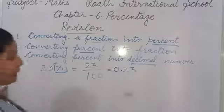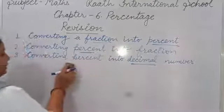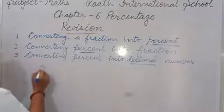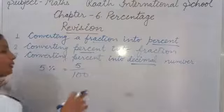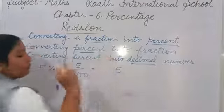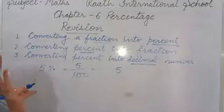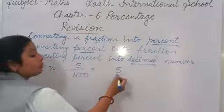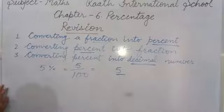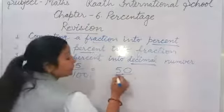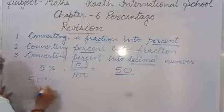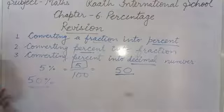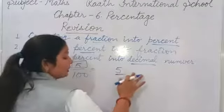Like this we can convert percent into decimal. One more example: suppose we have 5 percent. First, remove the percentage symbol: it becomes 5 upon 100. Now with 100 as denominator we take 2 decimal places. But there is only 1 digit in the numerator. We cannot put 0 after 5 because that would make it 50, which is not our numerator.